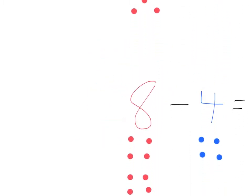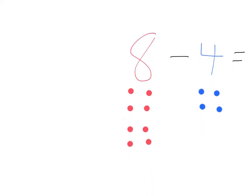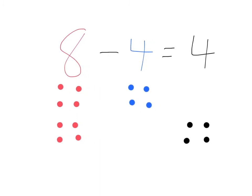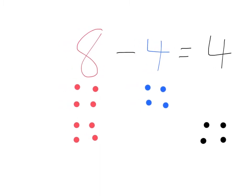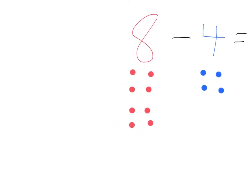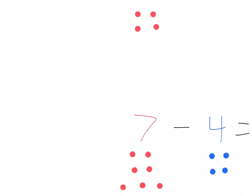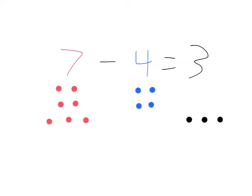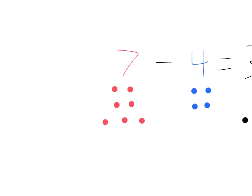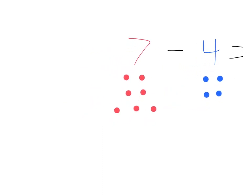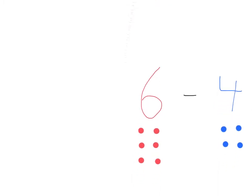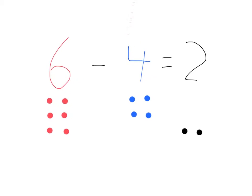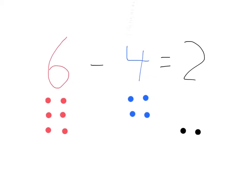After that we are going to do 8 minus 4. 8 minus 4 equals 4. Then we have 7 minus 4. 7 minus 4 equals 3. After that we want to do 6 minus 4. 6 minus 4 equals 2.